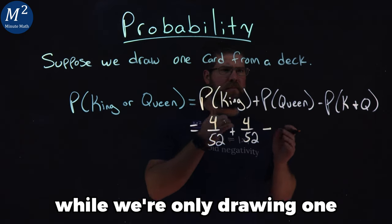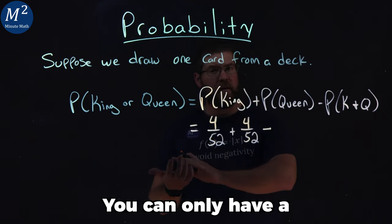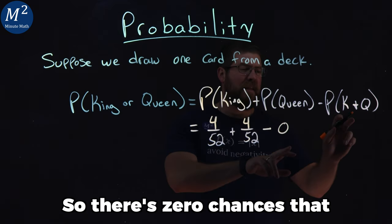We're only drawing one card and there's no overlap between kings and queens. You can only have a king or you can only have a queen. So there's zero chances that this is going to happen.